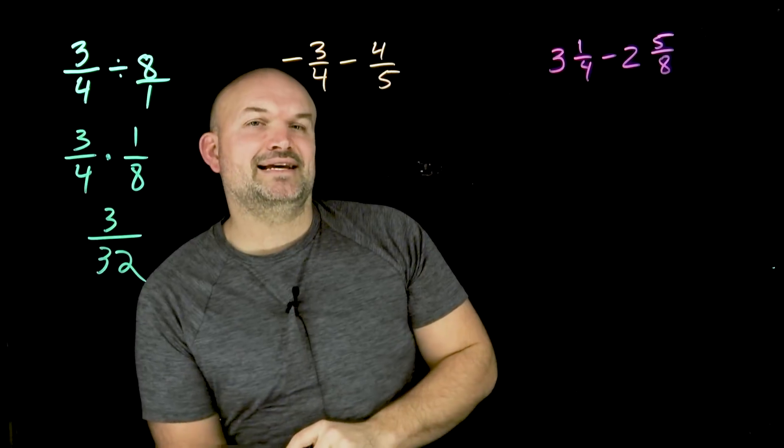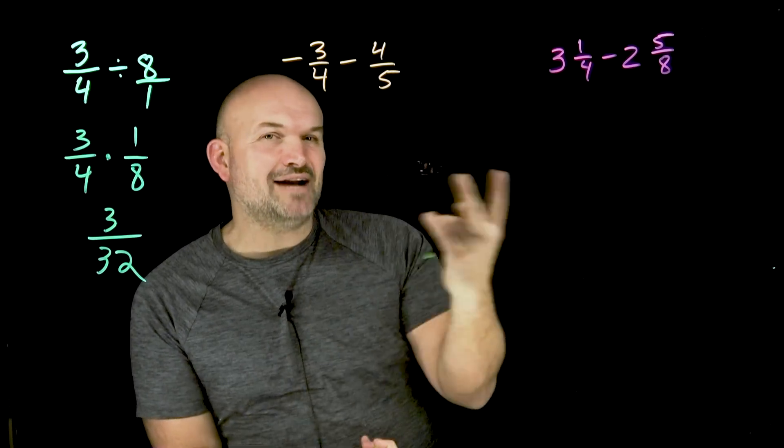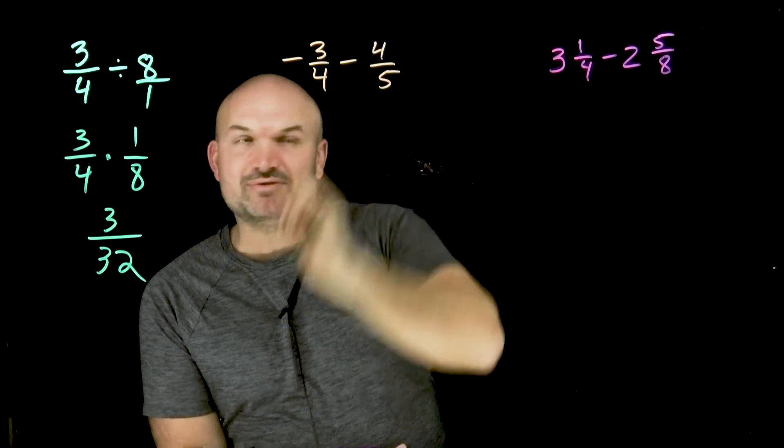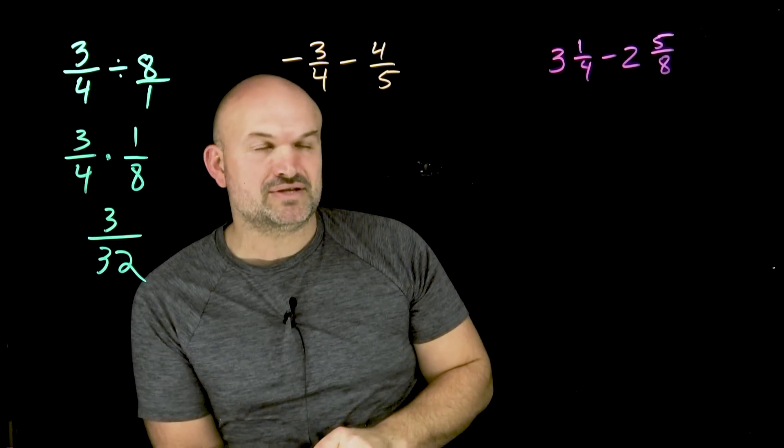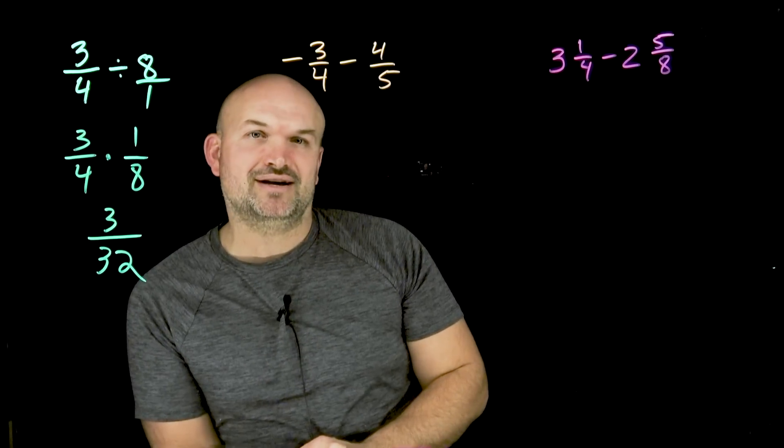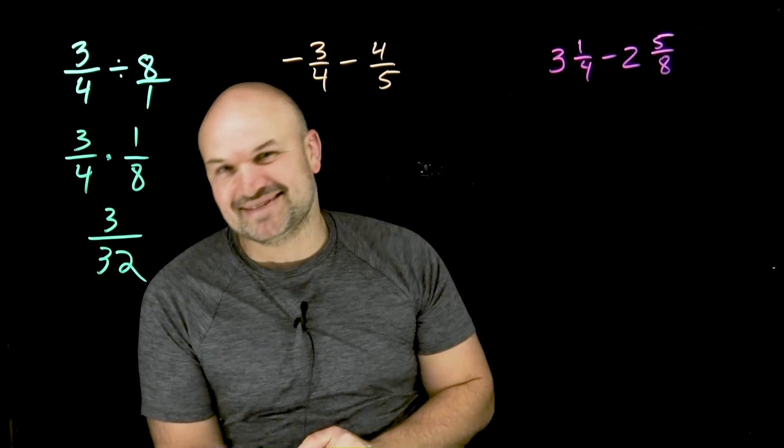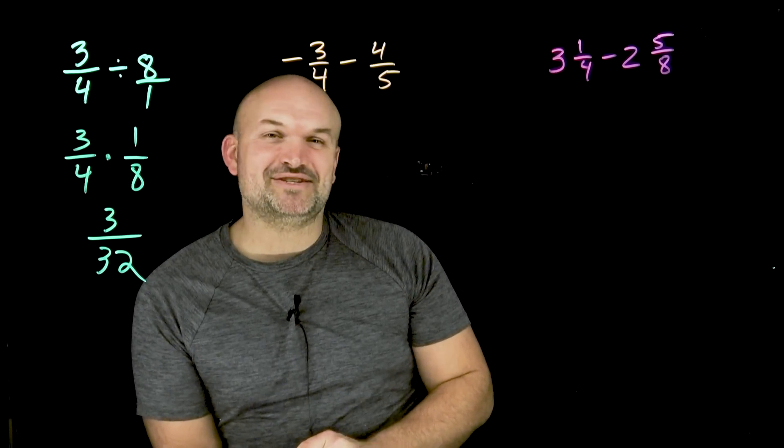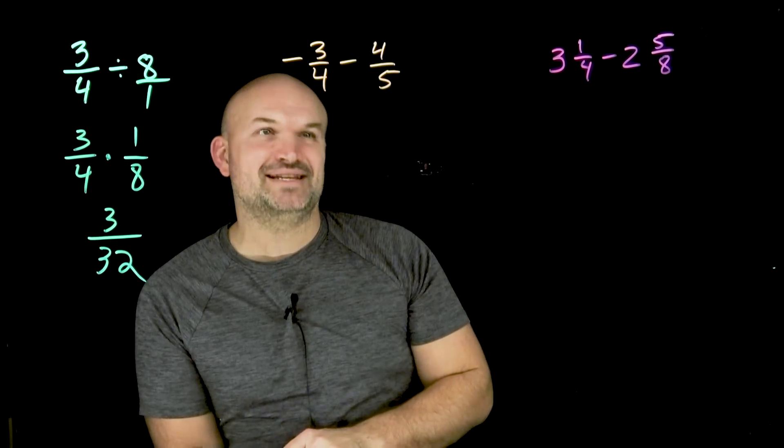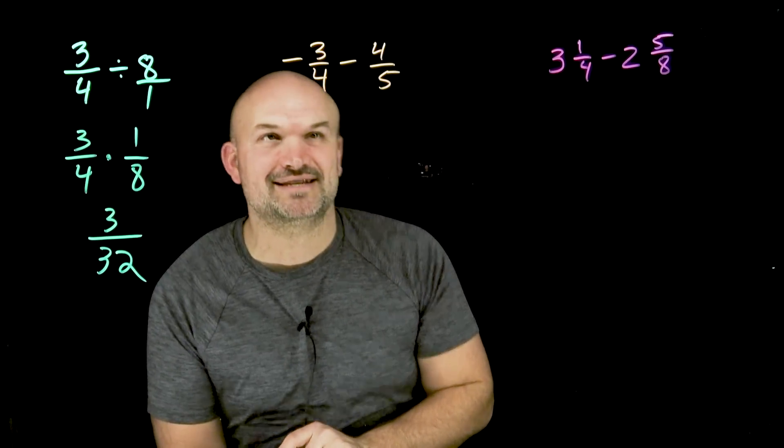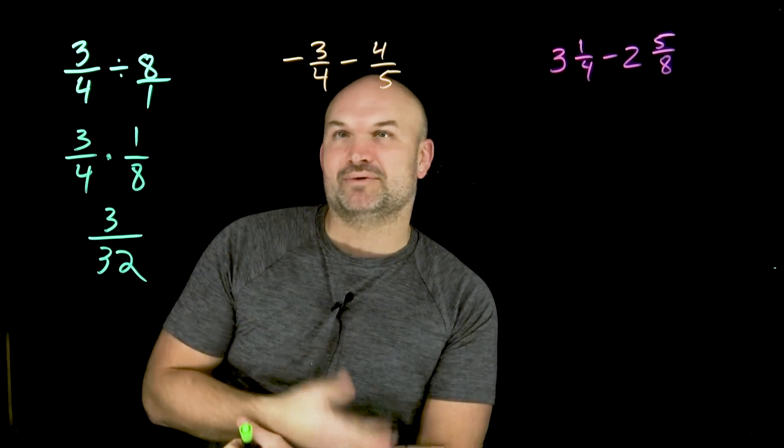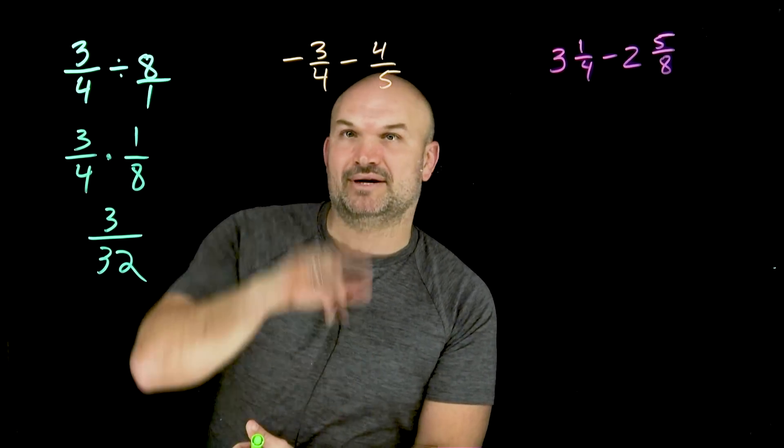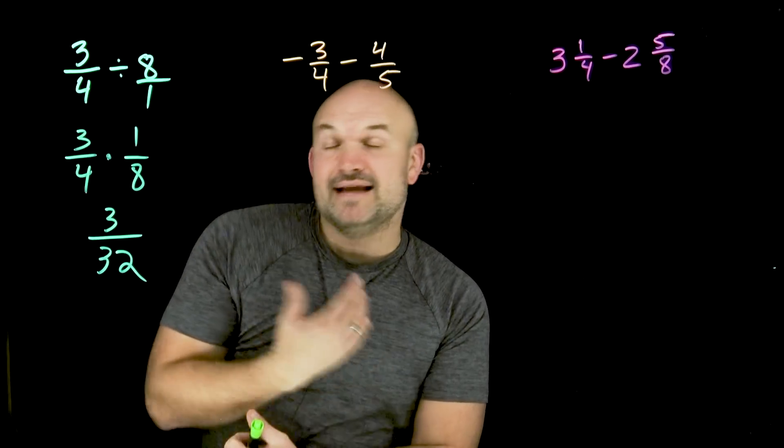Now the next one is I think one of the more confusing ones. Not only do I have a negative and then we're doing subtraction, but I also have two fractions that do not have common denominators. And I think whenever we're dealing with addition and subtraction of fractions and we don't have common denominators immediately, I think some kids just check out. They're like, I hate doing this. Why do we have to go through this process again? So I think one of the easiest things we can always do when we're trying to identify a common denominator is just multiply your two denominators.